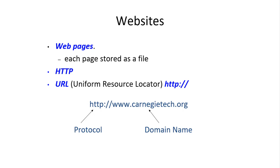A URL is a global internet address of documents on a computer that begins with HTTP. The first part of the address indicates what protocol to use, and the second part specifies the IP address or domain name where the resource is located. For example, in CarnegieTech.org, the protocol part and the domain name are not the same things.